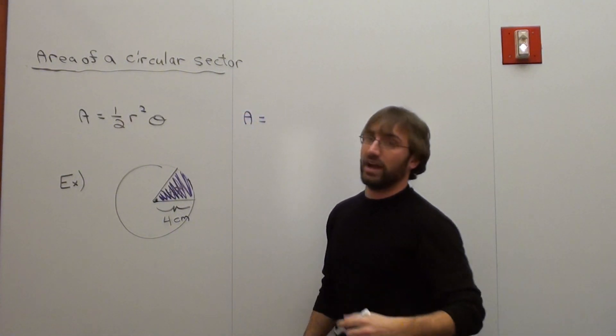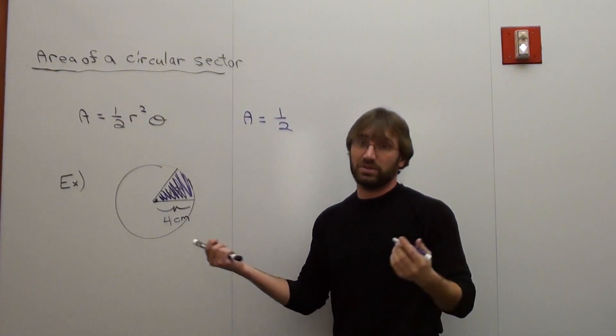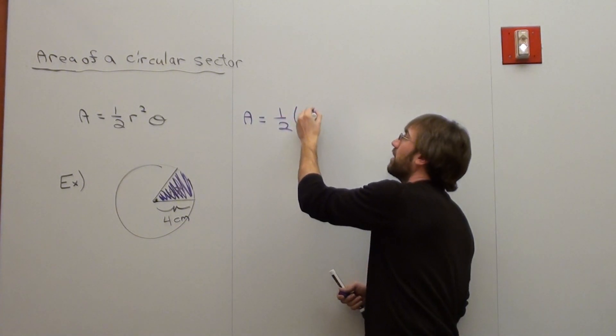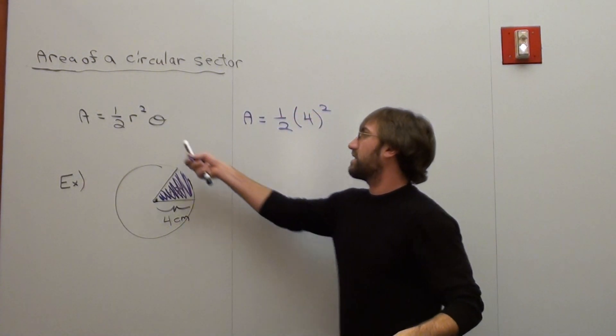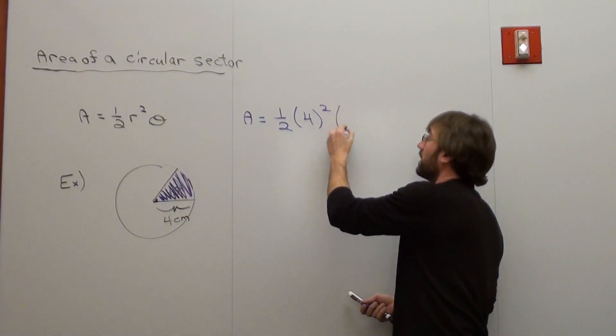A equals one half. The radius is 4 centimeters. When I do that, it's 4 centimeters times 4 centimeters, it's 4 squared. And then it's times the radian measure. It's 45 degrees. That's the same thing as pi over 4 in terms of radians.